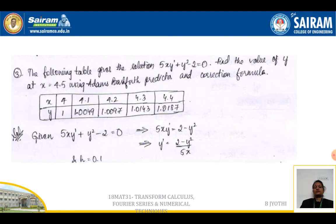Previously we computed y₄; now we need to compute y₅. To compute y₅, the previous four values from x₁ to x₄ only should be considered. Consider y' = (2 - y²)/(5x) and h = 0.1 because the difference between successive x values is 0.1.